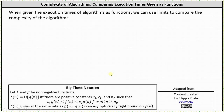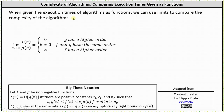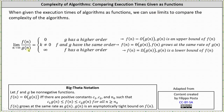When given the execution times of algorithms as functions, we can use limits to compare the complexity of the algorithms. Where if the two functions are f of n and g of n, we take the limit as n approaches infinity of f of n divided by g of n. By doing this there are three possible outcomes. If the limit is equal to zero, then the function in the denominator g of n has a higher order. We can state that f of n is Big O of g of n, which indicates g of n is an upper bound of f of n.